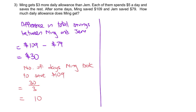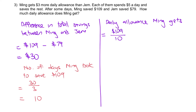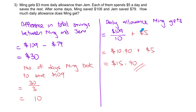Then from here, given that they took 10 days to spend and save, we can figure out Ming's daily allowance. $109 divided by 10 gives the amount saved per day. Ming spent $5 per day, so $10.90 plus $5 equals $15.90. This is the amount Ming gets for his daily allowance.